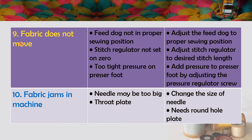Machine trouble: fabric does not move. Causes: feed dog not in proper sewing position, stitch regulator not set (set at zero), or too tight pressure on the presser foot. Remedies: adjust the feed dog to proper sewing position, adjust stitch regulator to desired stitch length, and add pressure to presser foot by adjusting the pressure regulator screw. Number ten: fabric jumps in machine. Cause: needle may be too big or wrong throat plate. Remedy: change the size of the needle and use a round hole plate.